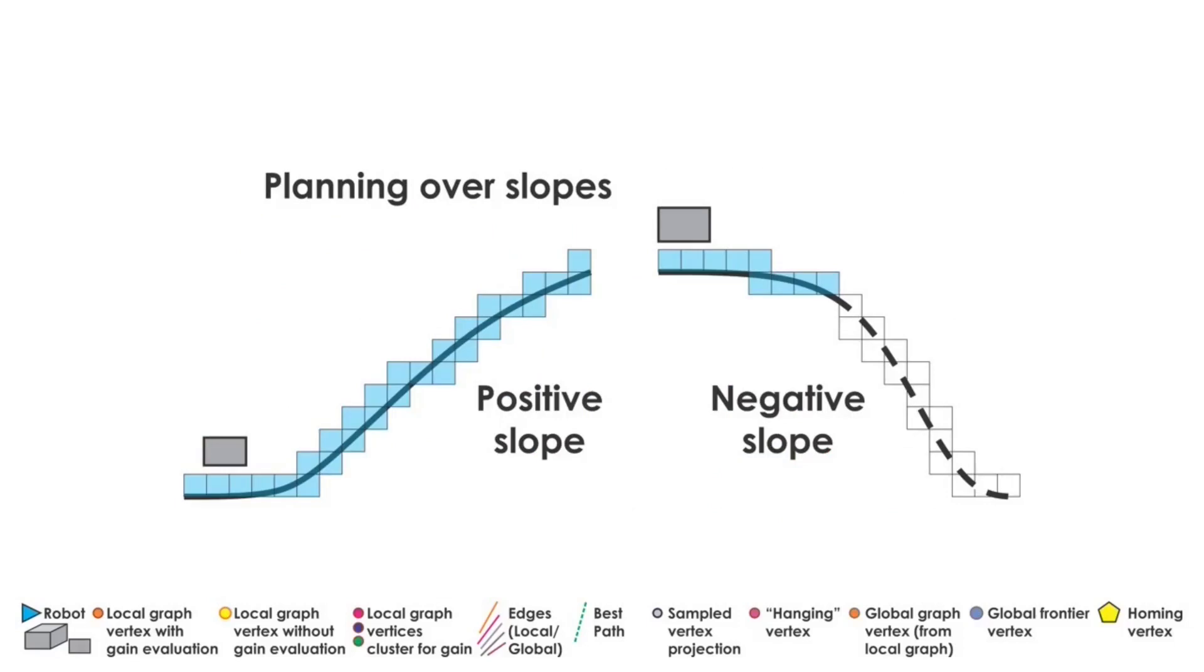For the ground robot to traverse inclined positive or negative slopes, the graph must be built along the slope and must consider the robot's limitations on maximum allowed inclination. An edge in the graph is considered to be admissible if it is collision-free and its inclination is within the robot's limits.